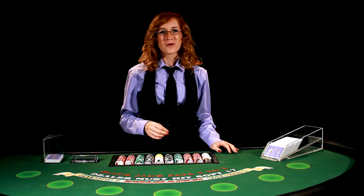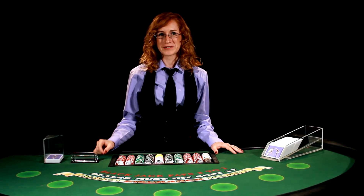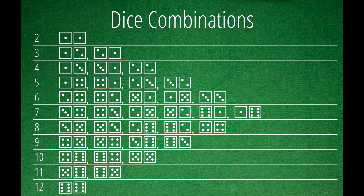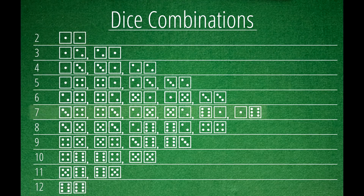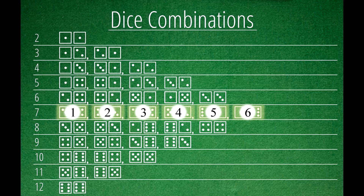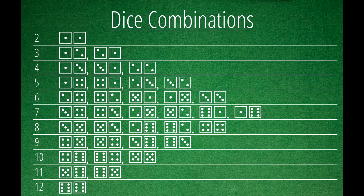When rolling two dice, the probability of rolling a certain combination is one in 36, meaning there are 36 possible combinations. Not all numbers are created equal — some combinations show up far more frequently than others. Two and 12 are rolled least because there is only one combination for each, while seven has six combinations, giving it a 16.67% chance compared to the 2.78% chance of rolling a two. That's why knowing probability before playing the game is so important.